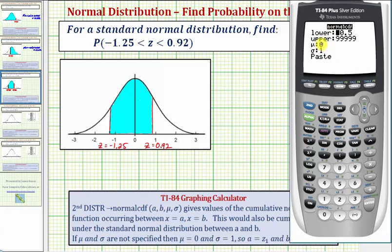Again, because we're going to let mu equal zero and sigma equal one—remember mu is the mean and sigma is the standard deviation—the lower bound and upper bound values are going to be z-scores. So our lower bound is negative 1.25. Enter. The upper bound z-score is 0.92. And since mu and sigma are already zero and one, we'll press enter down to paste.